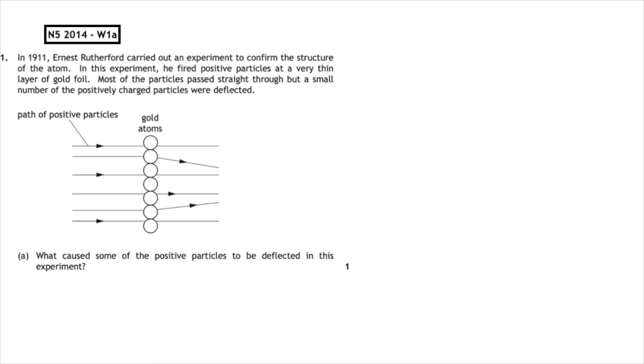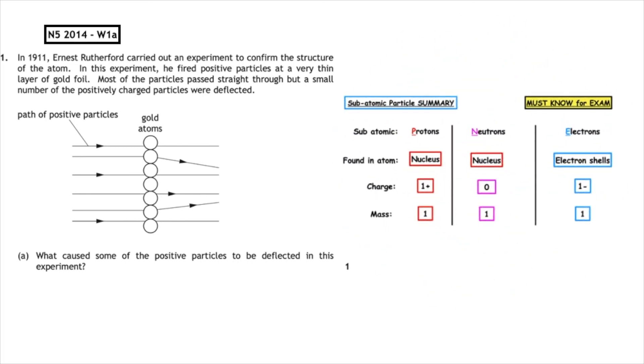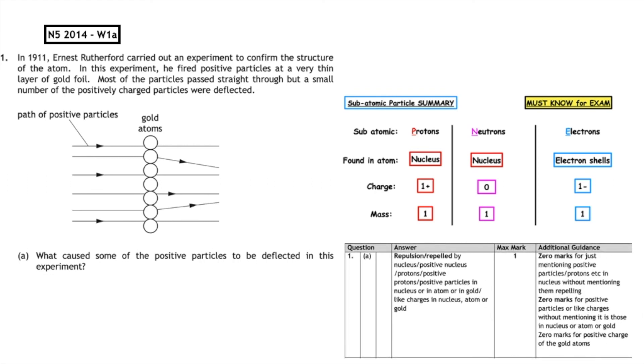So we need to know what the word deflected means. The word deflect means to change direction, turn aside from straight course. So what we're looking at is we're looking at something which repels, it doesn't like. Now, we've all heard the term opposites attract, which means positive likes negative. So what charge would a positive particle repel? What would it not like? It wouldn't like the same charge. What particle is positive, which is inside the atom? And what we're looking at is the protons. So therefore, it's the protons inside the nucleus, which cause the positive particles to be deflected.